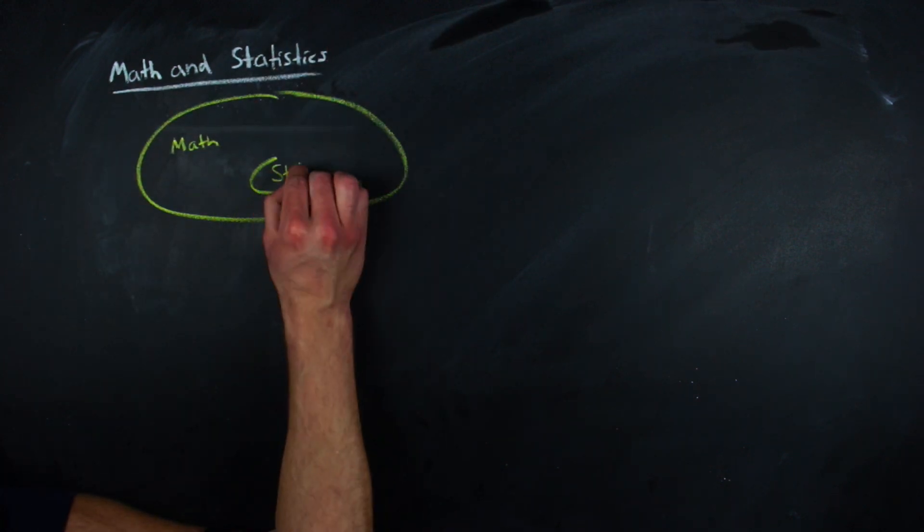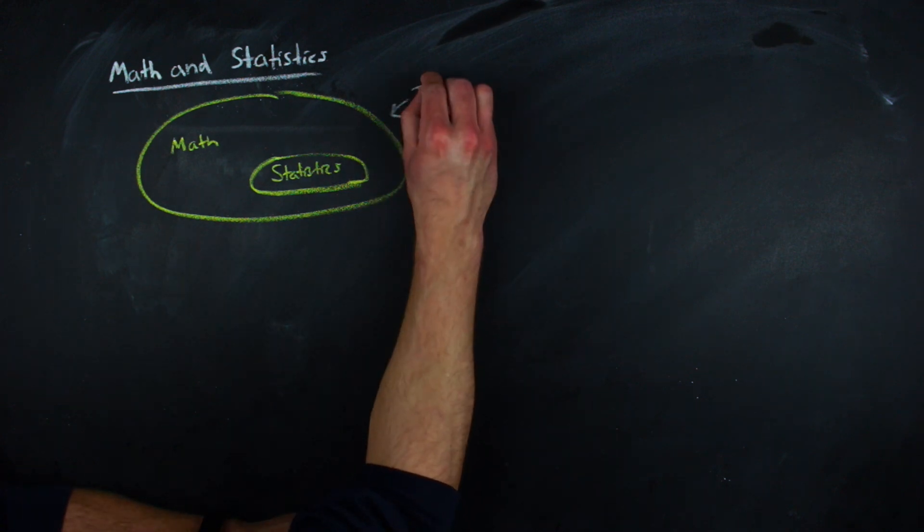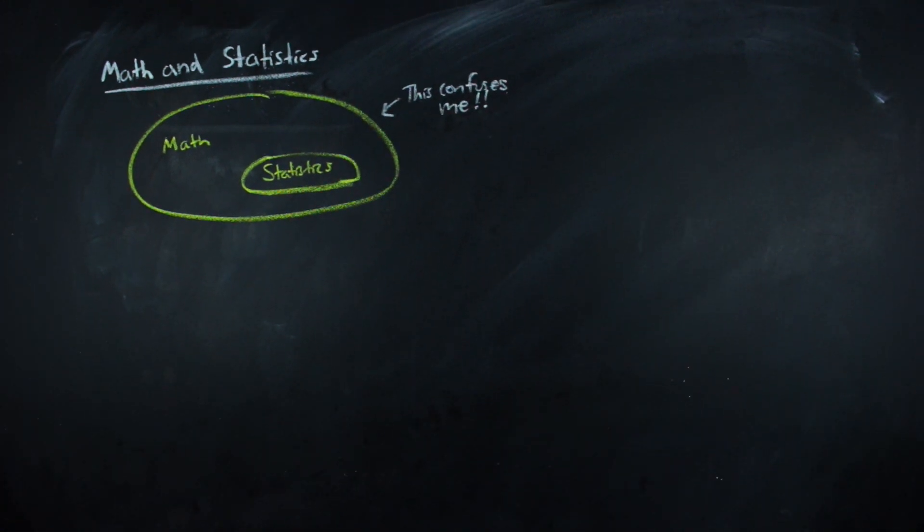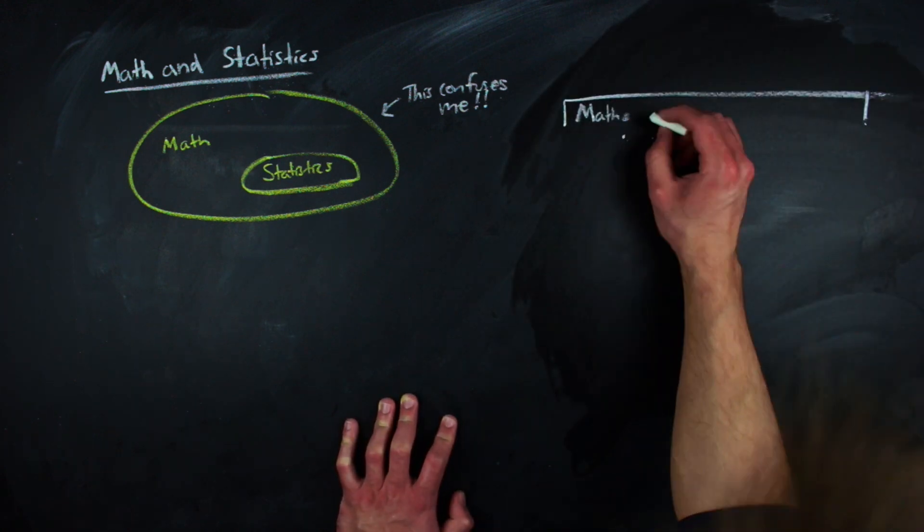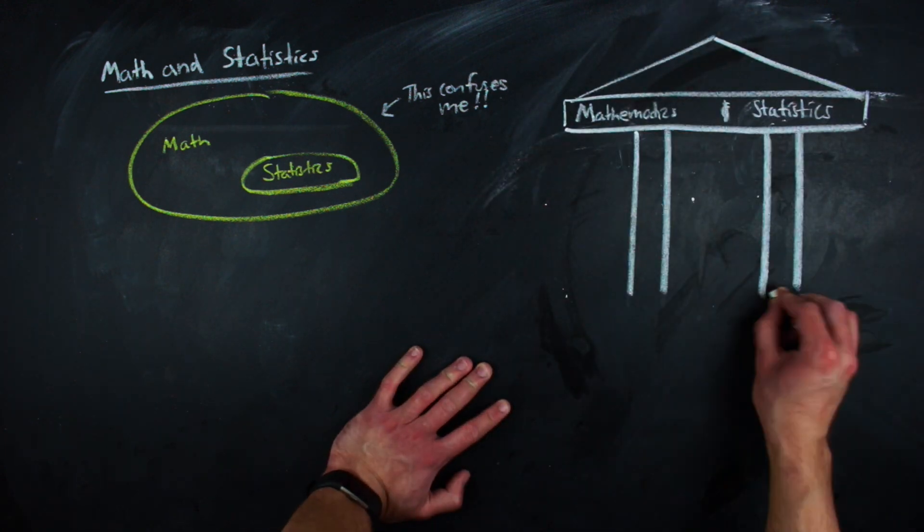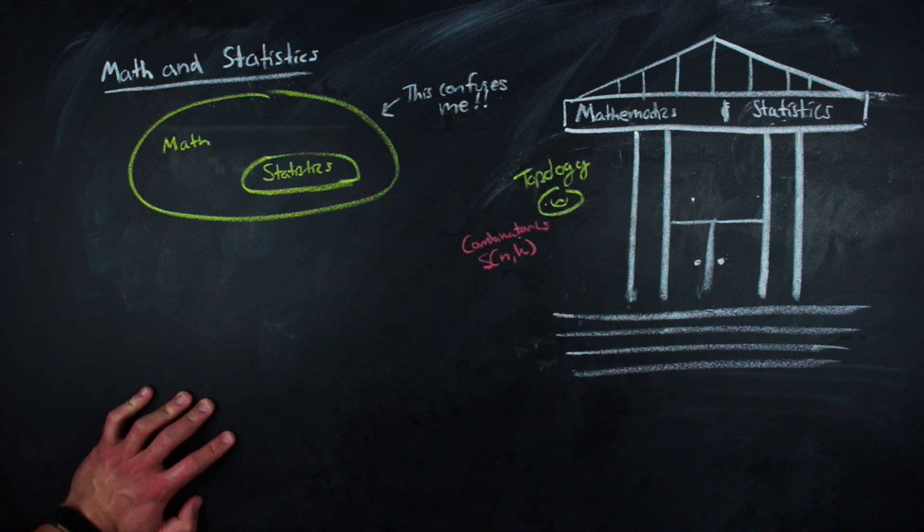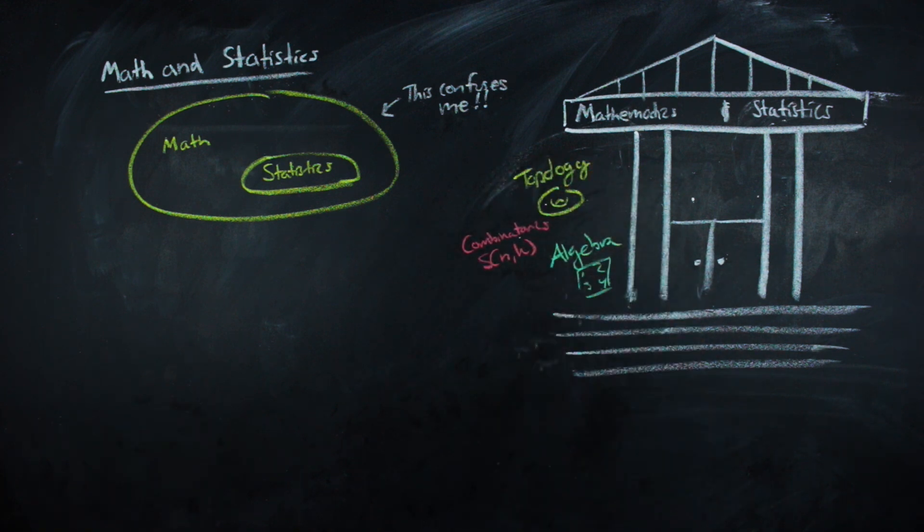That's why I always get a bit confused when statistics is thought of as a mathematics subject. There's gotta be a reason that several colleges and universities have departments of mathematics and statistics, intentionally separating out stats from the likes of topology, combinatorics, algebra, and other fields of math.